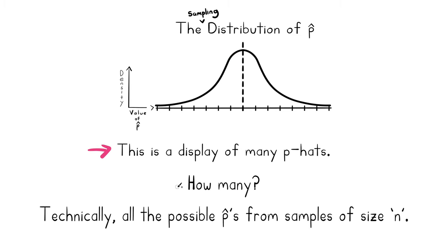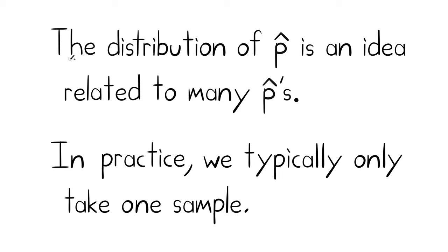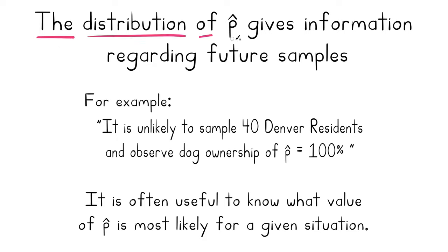How many samples is the distribution of P-hat referring to? It's referring to all the possible P-hats you could take from a given population — typically a lot. If you're sampling 40 Denver residents from maybe a million residents, the number of possible groups of 40 is quite large. In practice we usually only take one sample. Because of the central limit theorem, it's unlikely to sample 40 Denver residents and observe dog ownership of P-hat equals 100 percent.